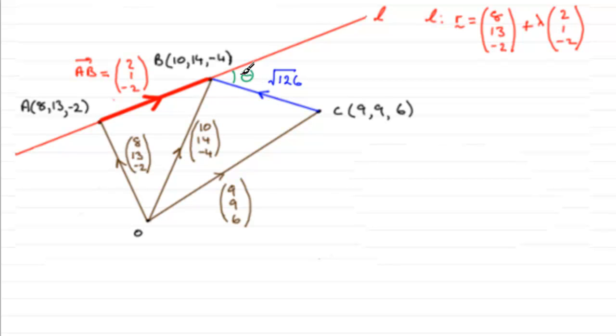So how do we get this angle theta? When we're trying to find angles in vector questions, generally we have to use the scalar product or dot product, as some people call it.